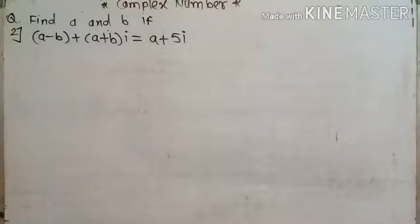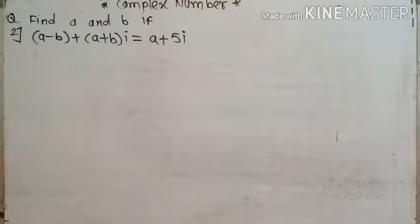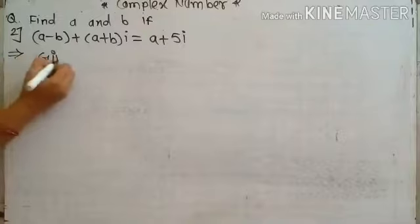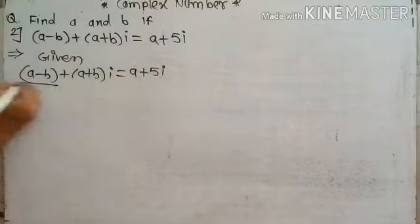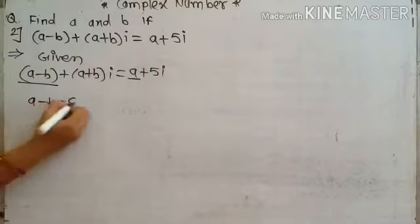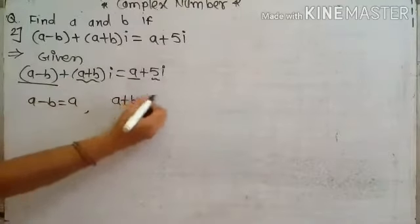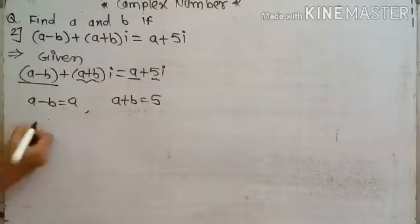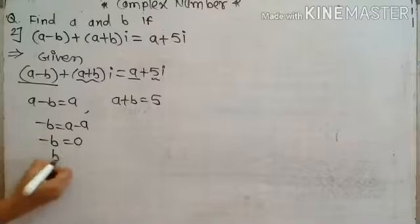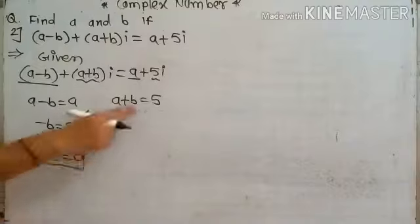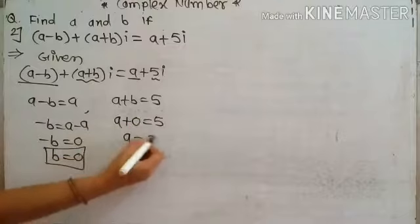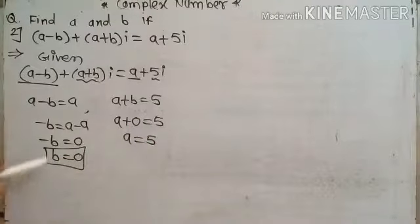The second example: if a minus b plus a plus bi is equal to a plus 5i, find the value of a and b. Comparing real and imaginary parts, and using b equal to 0 in the equation, a plus 0 is equal to 5, therefore a is equal to 5. By equality of complex numbers we get a equal to 5 and b equal to 0.